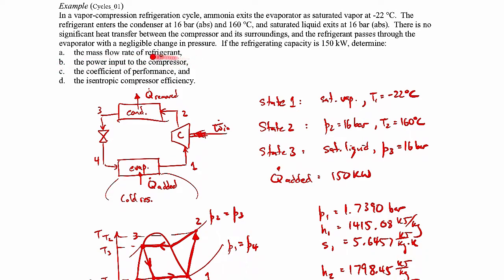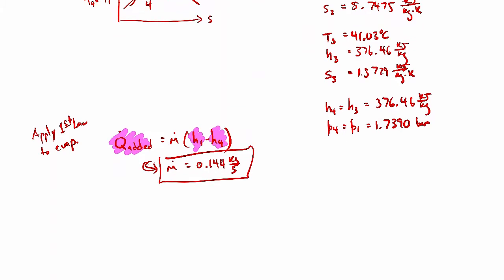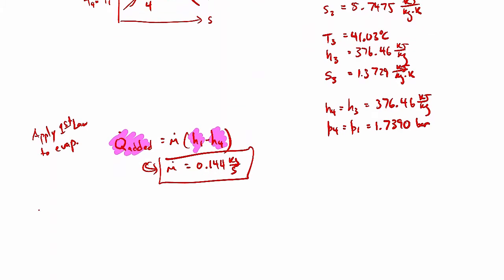For part B, we determine the power input to the compressor. Applying the first law to a control volume surrounding the compressor — with no heat transfer — the power input is Ẇ_in = ṁ × (h2 − h1). We know the specific enthalpies and now know the mass flow rate. Working this out gives Ẇ_in = 55.4 kilowatts.